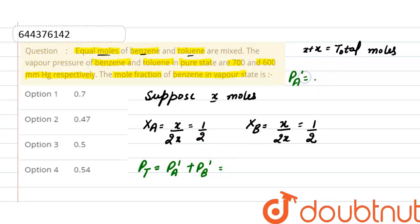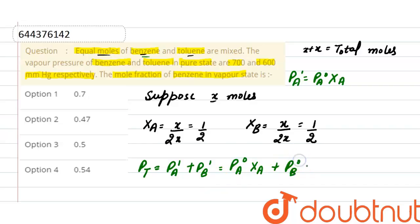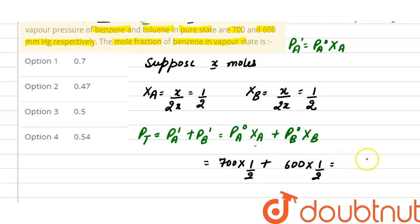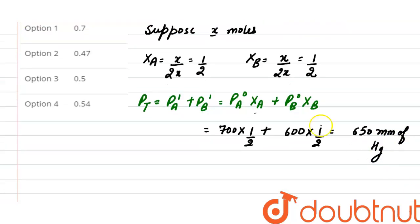Total pressure equals partial pressure of benzene plus partial pressure of toluene. By Raoult's Law, partial pressure equals vapor pressure in pure state multiplied by mole fraction. So total pressure = 700 × (1/2) + 600 × (1/2) = 650 mmHg.